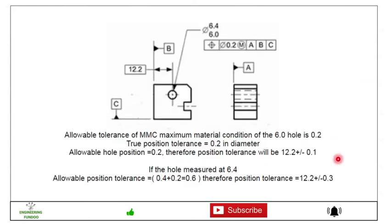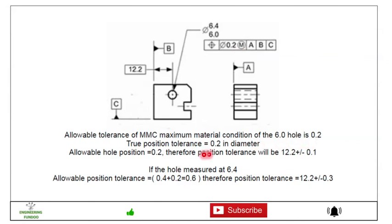Let's see how it is applied on a drawing. The allowable tolerance zone at maximum material condition (MMC) for a 6 mm hole is 0.2 mm. The position tolerance equals 0.2 in diameter. Here you can see a circular hole with diameter 6 and 6.4 — the position tolerance is given as 0.2 with maximum material condition. The true position of the hole at MMC is 0.2 in diameter, so the allowable hole position is also 0.2, giving a position tolerance of 12.2 plus or minus 0.1.